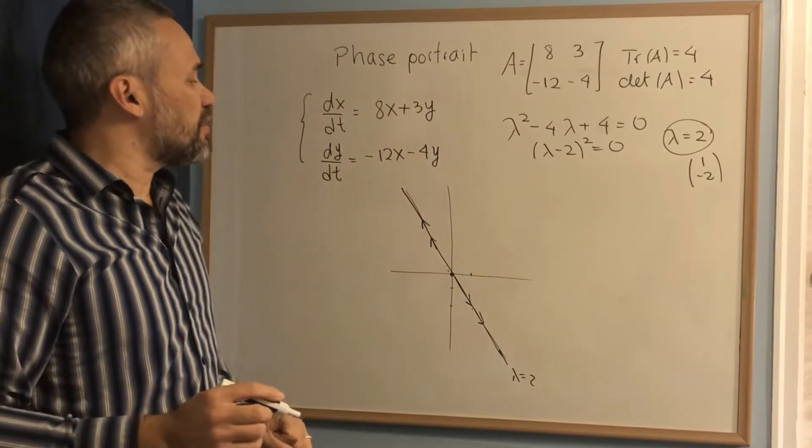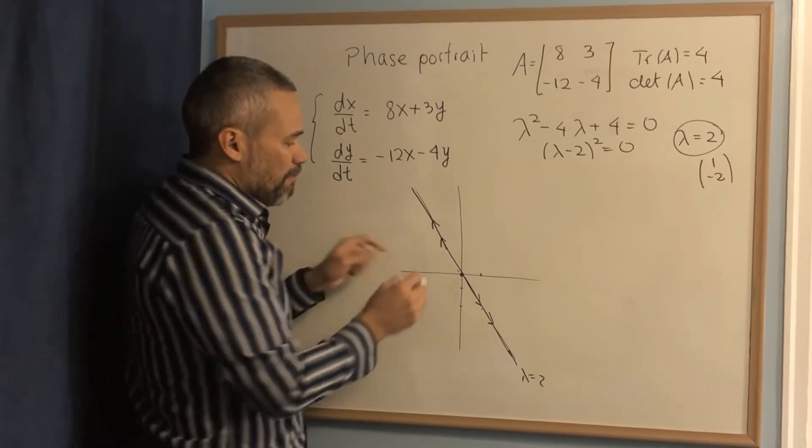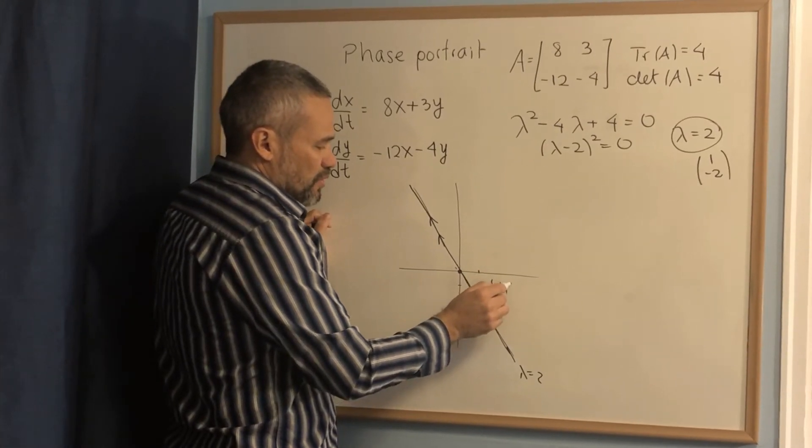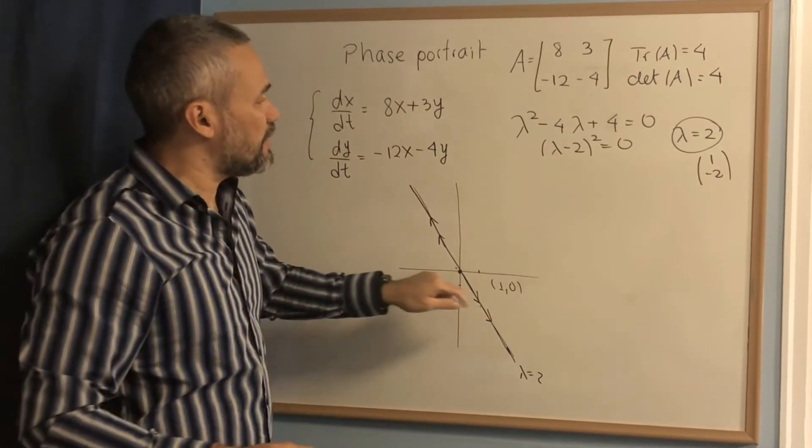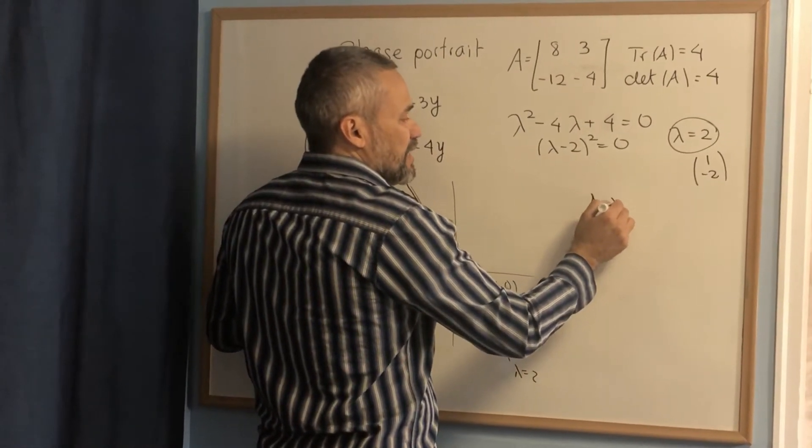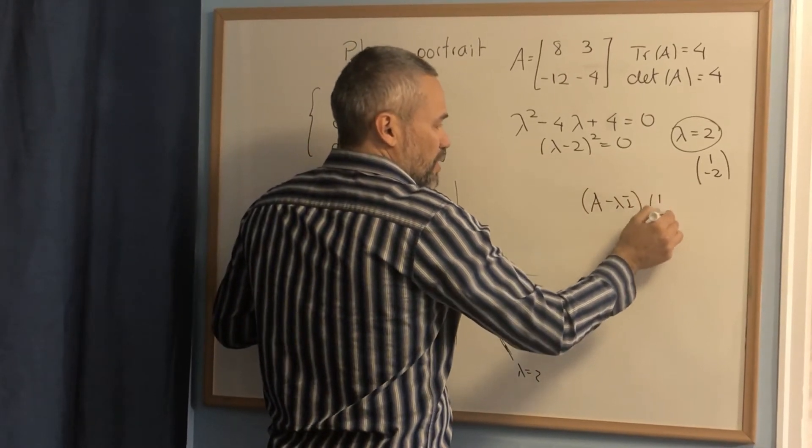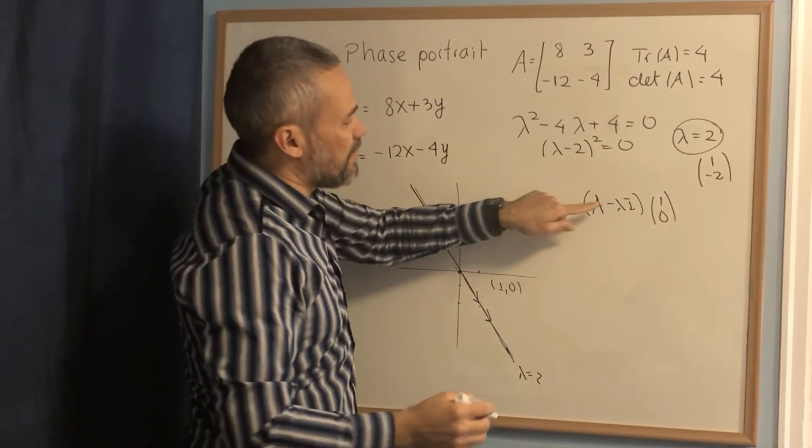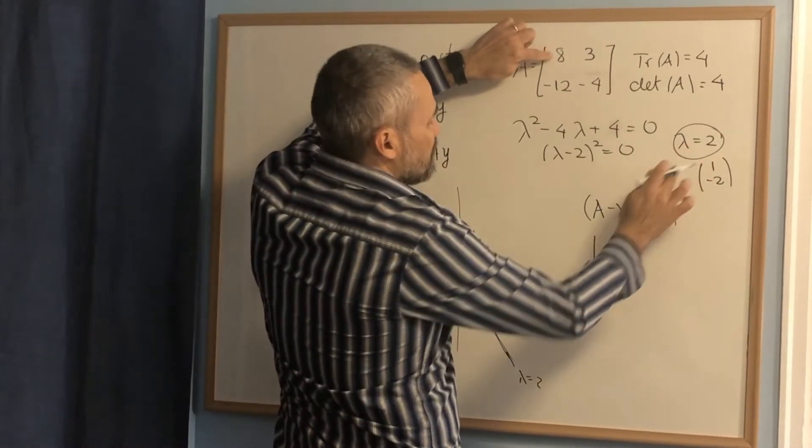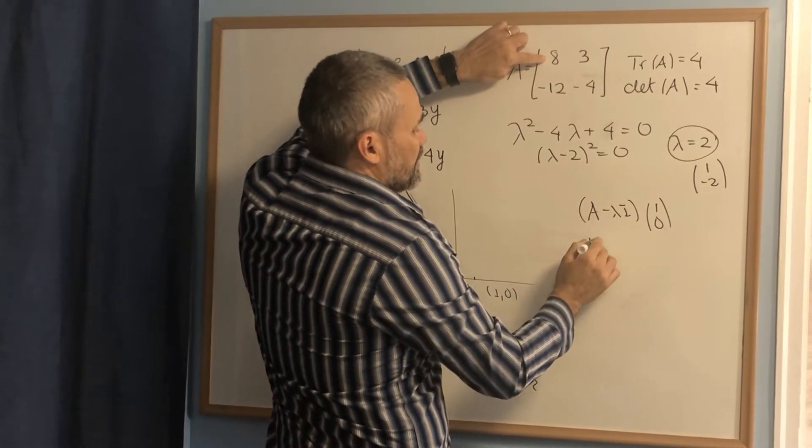In order to do the other orbits, we pick a point that is not in that line. Let's pick this point: 1, 0. Then we compute the matrix A minus lambda I times the point that we have selected, 1, 0. In this case, A minus lambda I, remember that lambda is 2, then A minus 2 will be 6, 3, negative 12, and negative 6.